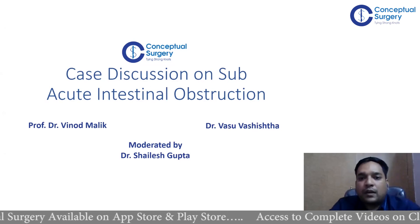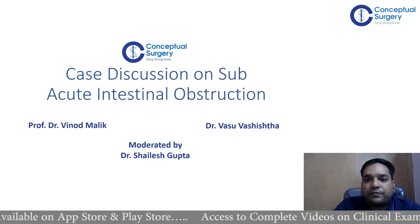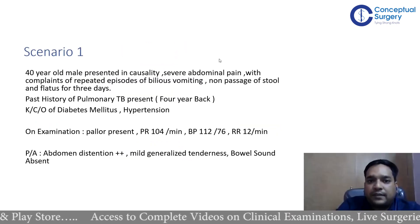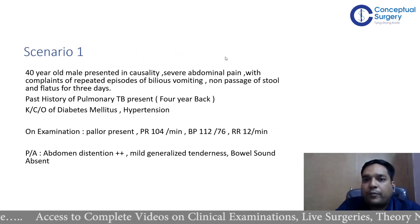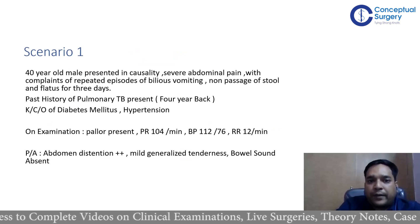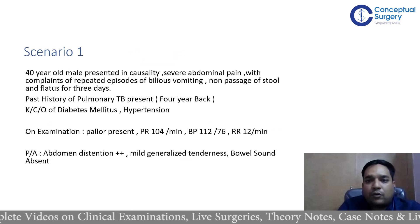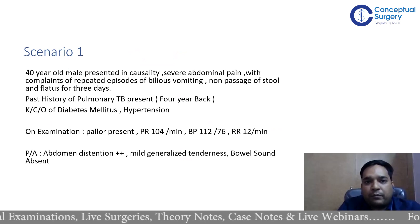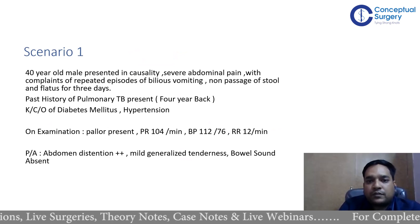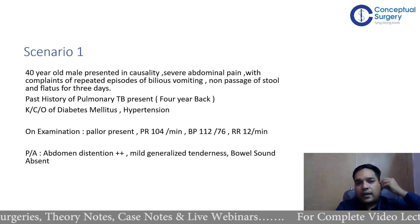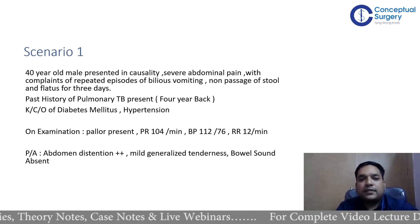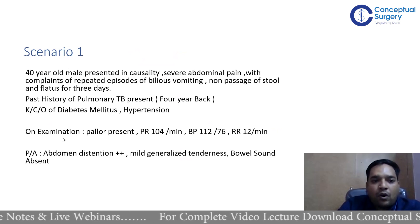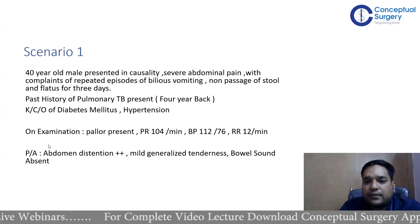I want to start with the first scenario. A 40-year-old male presented in casualty with severe abdominal pain, repeated episodes of bilious vomiting, and non-passage of stool and flatus for three days. He has a past history of pulmonary tuberculosis four years back and is a known case of diabetes mellitus and hypertension. On examination, pallor is present.